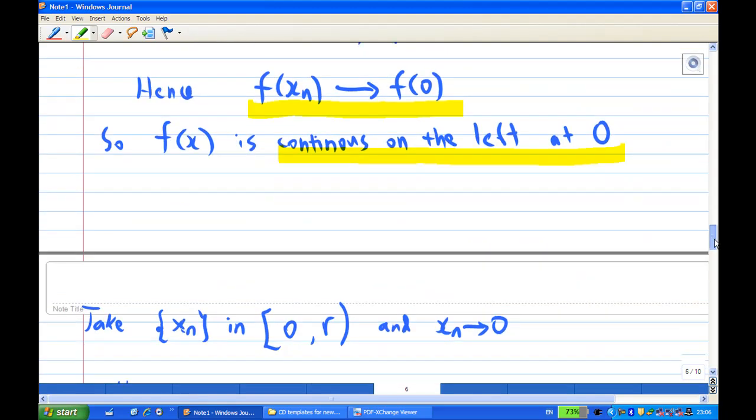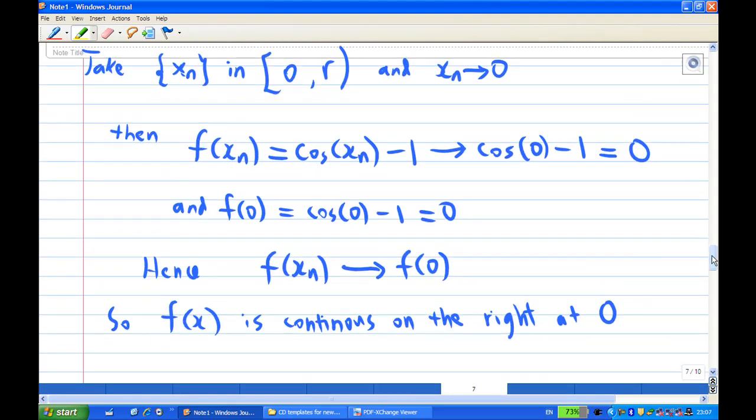We do the similar procedure, take the xn on the right side of the interval, half of the interval, so the xn inside this half of the interval, and xn converges to 0. Now, because xn greater than 0 now, so therefore the definition of f of xn is equal to cosine xn minus 1.